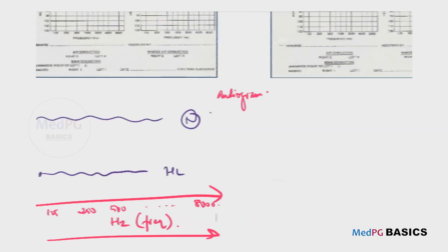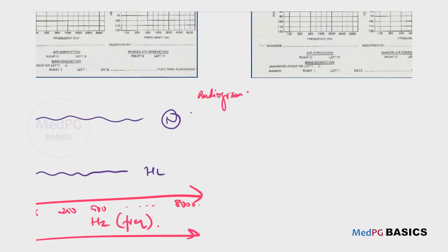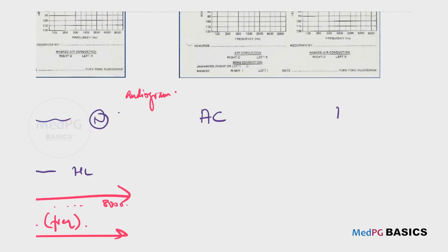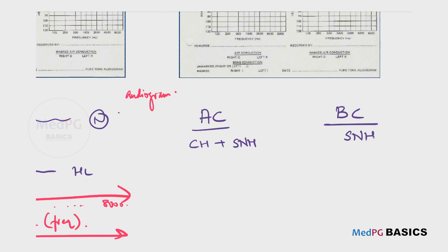In a pure tone audiogram, we measure two entities: we measure air conduction as well as bone conduction. As I have already mentioned, air conduction is conductive hearing plus sensorineural hearing. Bone conduction is only sensorineural hearing.